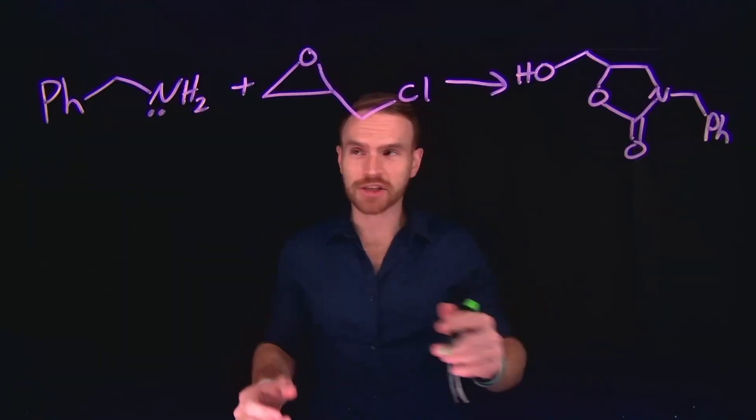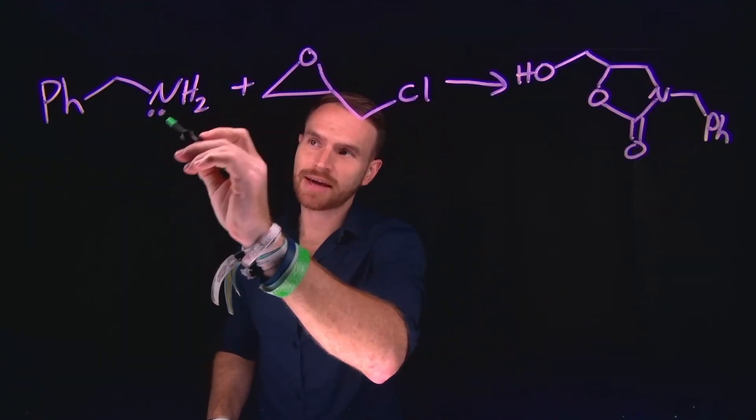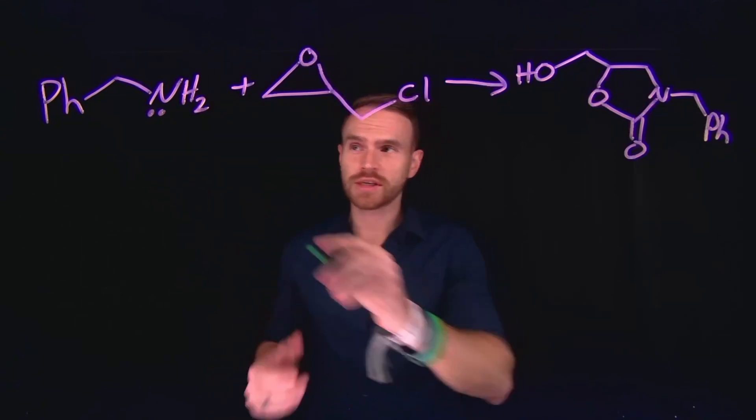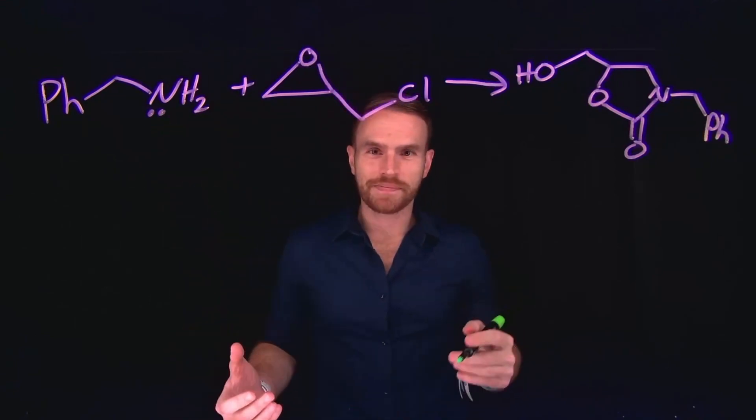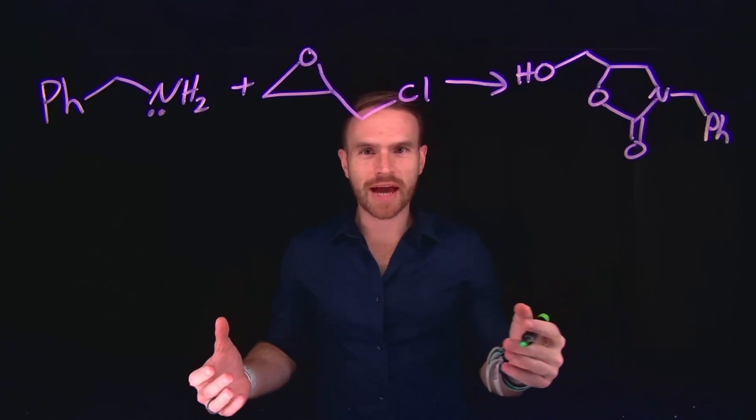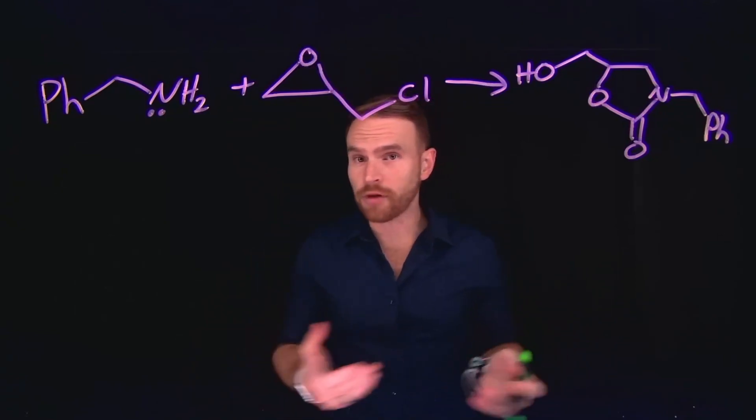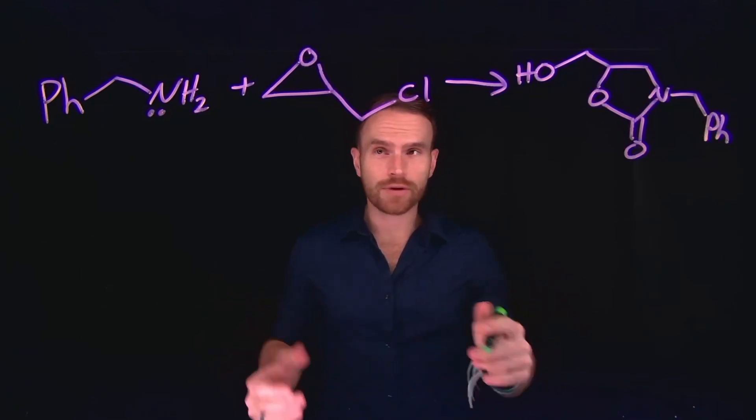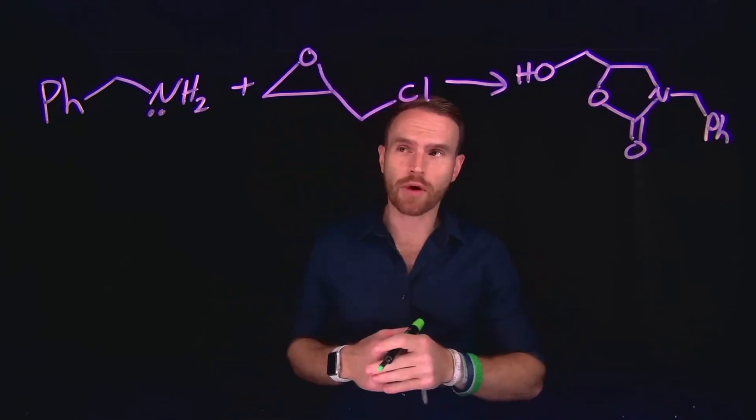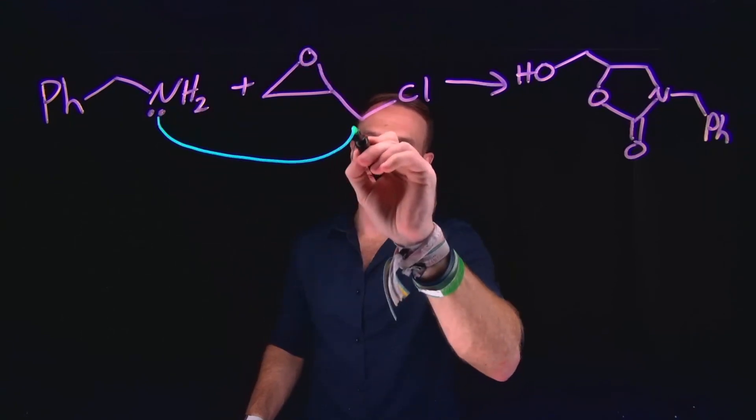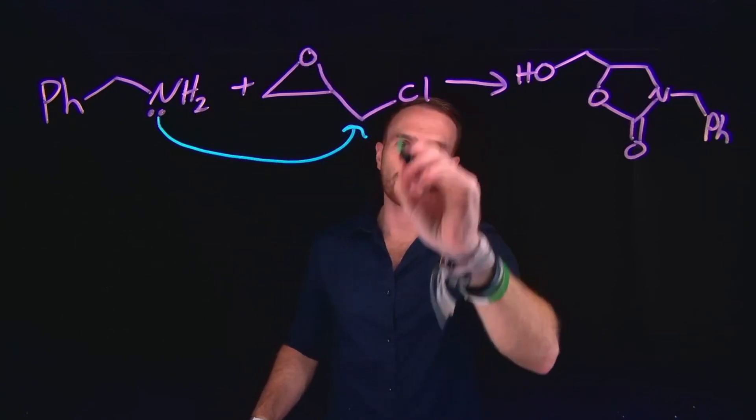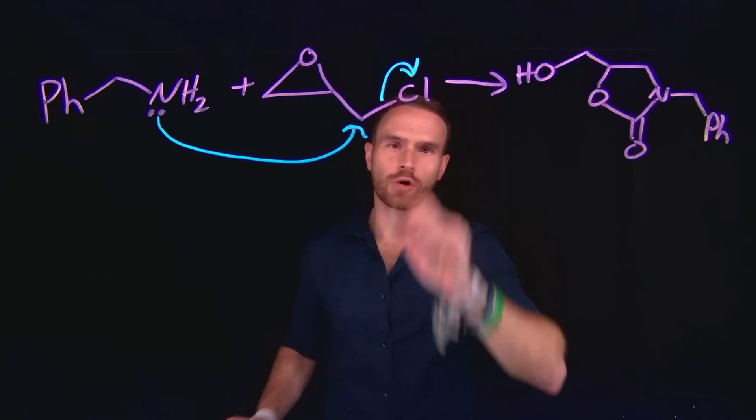The first step in this reaction is going to be nucleophilic attack from this benzylamine using the lone pairs of electrons on nitrogen. Now importantly, you've probably seen reactions where you can open epoxide rings by attacking on the backside with a nucleophile. However, in this case, with what's called epichlorohydrin, the first step is actually going to be a substitution reaction at this alkyl chloride position to kick off the chlorine.